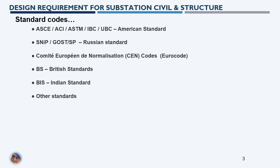For American standards, we have ASCE — American Society of Civil Engineers — and ACI — American Concrete Institute, which is a concrete material code. ASTM is the American Society for Testing and Materials. IBC is the International Building Code, and UBC is the Uniform Building Code, which has been superseded by IBC.